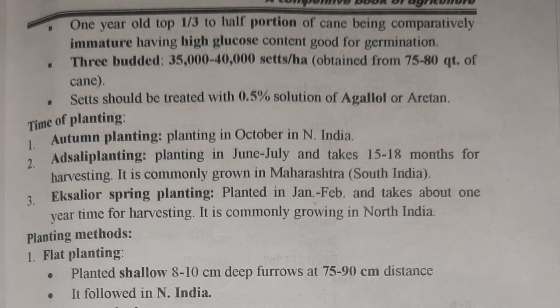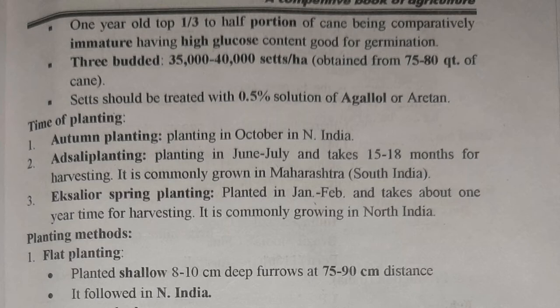Sets should be treated with 0.5% solution of Agallol or Aretan. Time of planting: for autumn planting, it can be done in October in North India. For adsali planting, it is done in June–July and takes 15 to 18 months for harvesting — commonly grown in Maharashtra and South India. For spring planting, it is done in January and February, takes about one year for harvesting, and is common in North India.